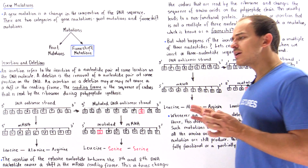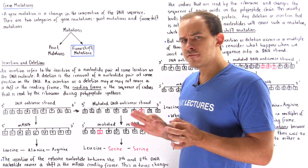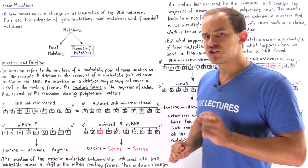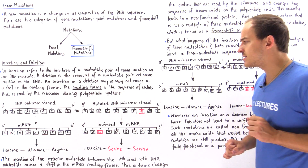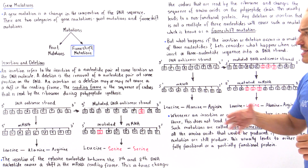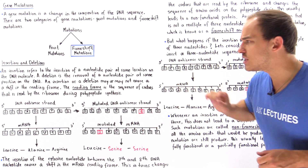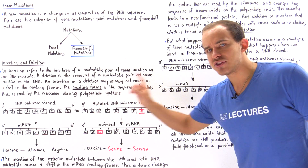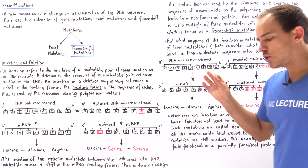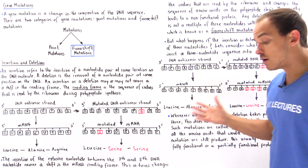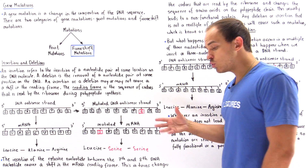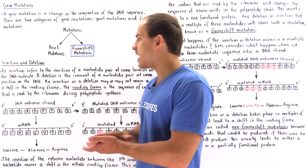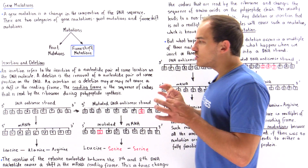What exactly is the reading frame? The reading frame is the sequence of nucleotides — the sequence of codons that is read by the ribosome during the process of translation when we synthesize our polypeptide chain.